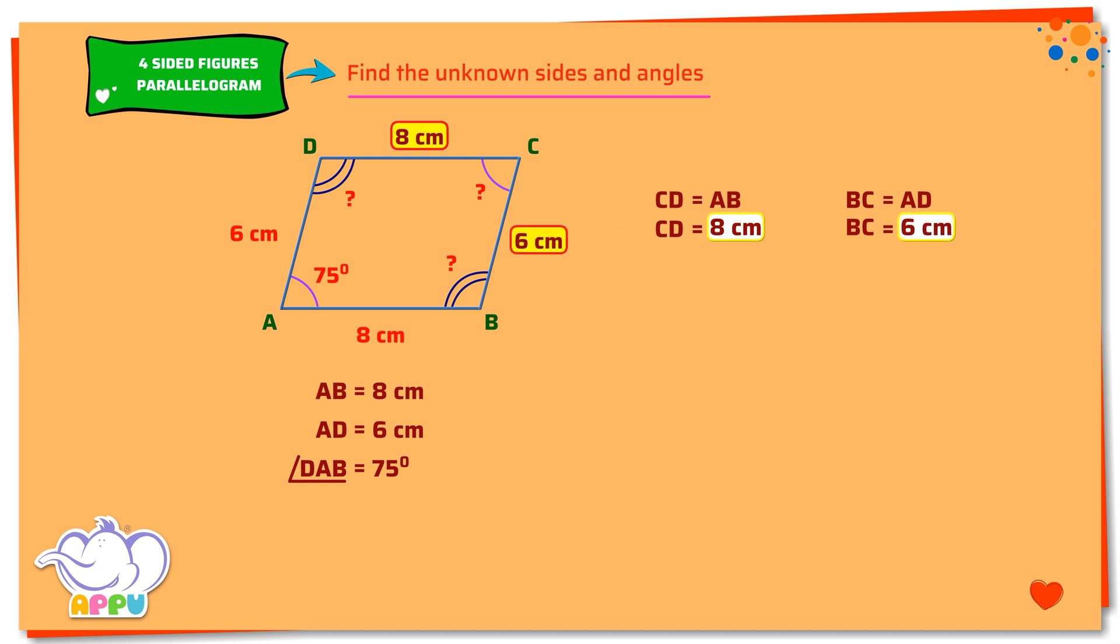Let's find the angle ABC. We know that the sum of each pair of angles between two parallel sides is 180 degrees. Angle DAB plus angle ABC equals 180 degrees.